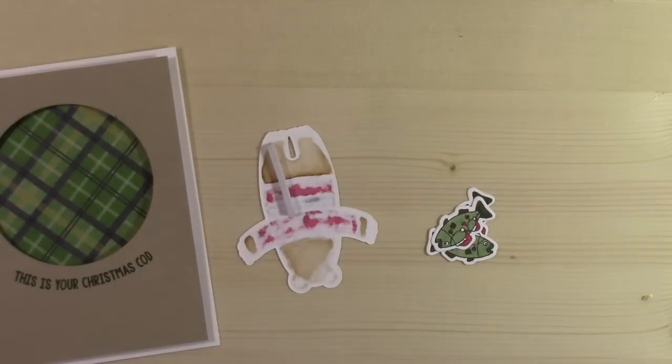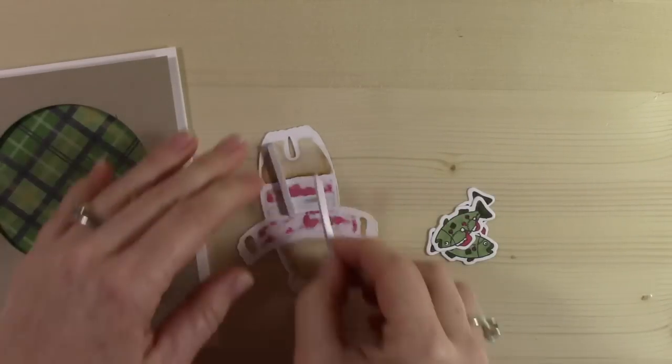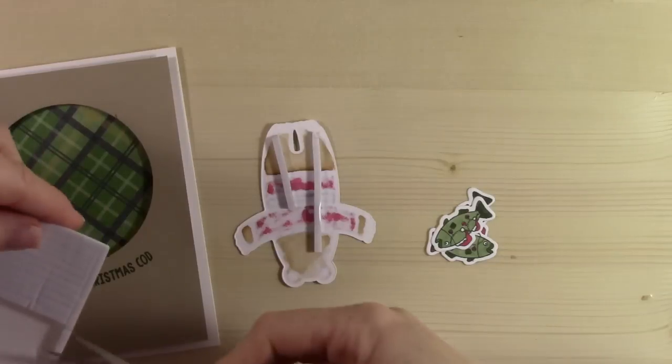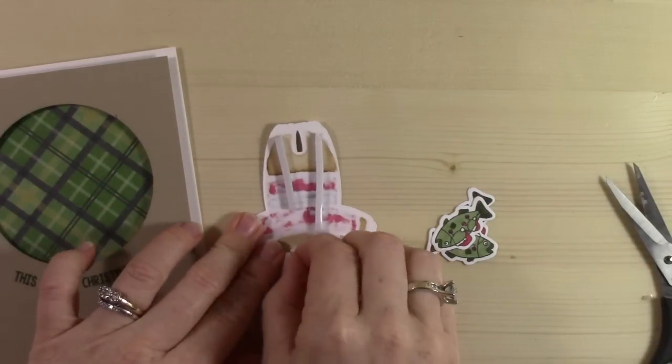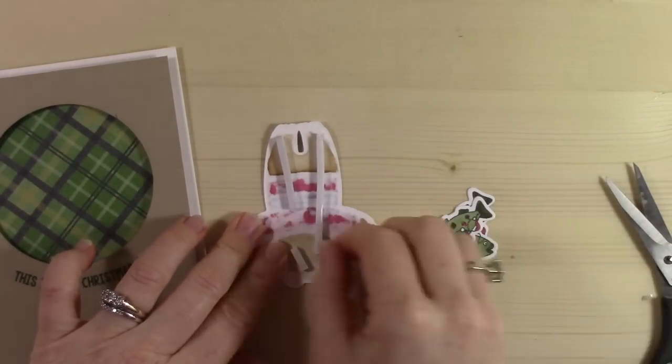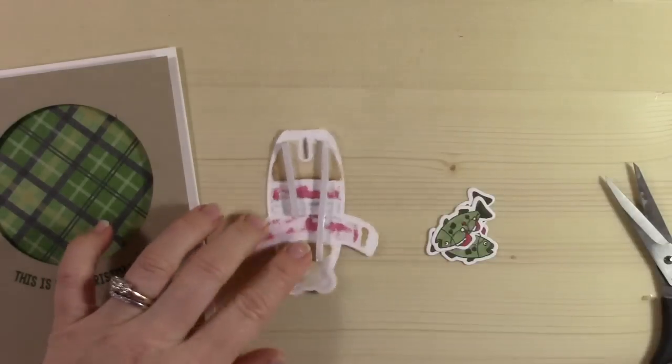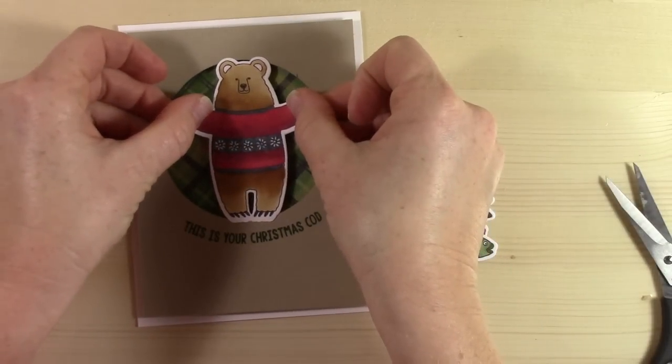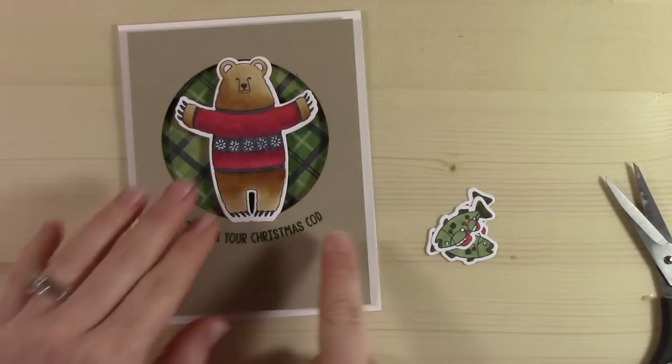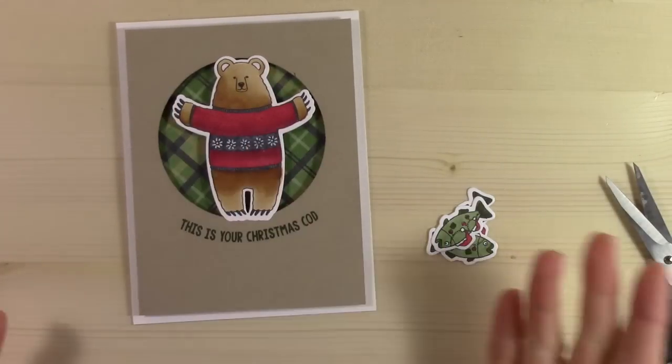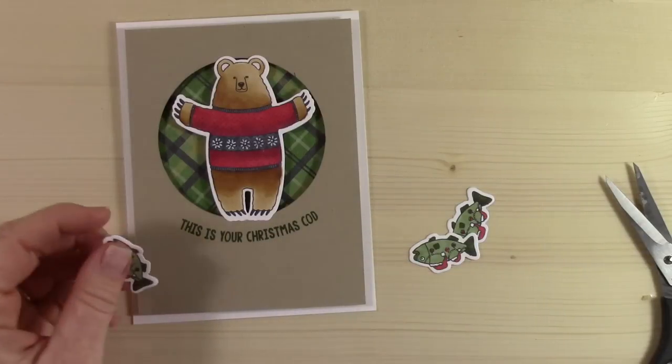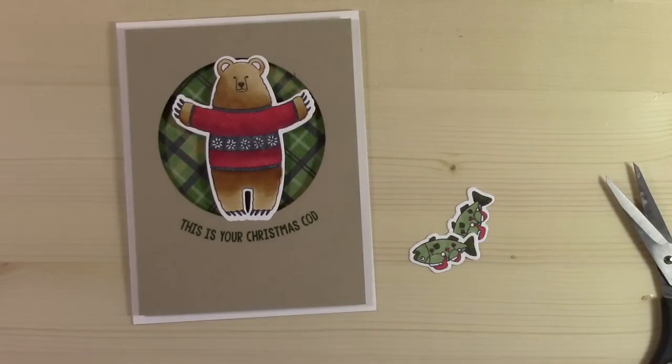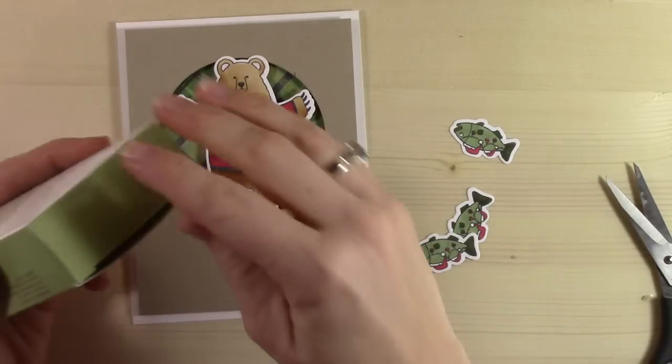This is Garden Green, and this is stamped in Garden Green, so it really pulls the green out. The fun thing about this is it matches my little fishies, and I did that on purpose. Everything's a plan, right? I'm just gonna add some dimensionals to the back of my bear, my big bear, and get him stuck down in the center. I just love how this card turned out.